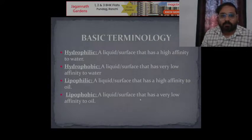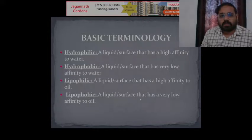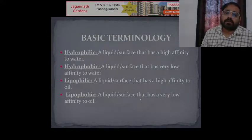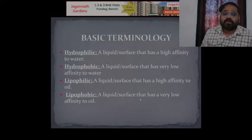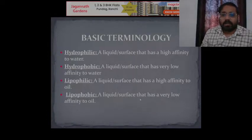Good morning everyone, I am Simachal Pandur. Today we will learn about surface active agents, also known as surfactants. Surfactants come from the words 'surface' and 'tension.' Any substance that will reduce the tension between two phases is known as a surface active agent. They are commonly used to reduce surface tension, such as in detergent powder used in everyday life.